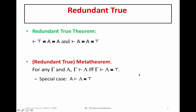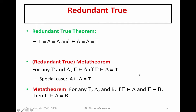Another perhaps surprising result is the following meta theorem, which is a direct application of the previous meta theorem. It says: for any collection of well-formed formulae gamma and well-formed formulae A and B, if gamma proves A and gamma proves B, then gamma proves that A is equivalent to B. This seems like a very surprising result.